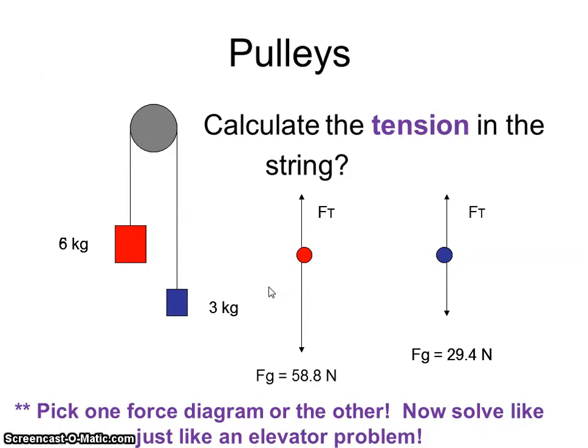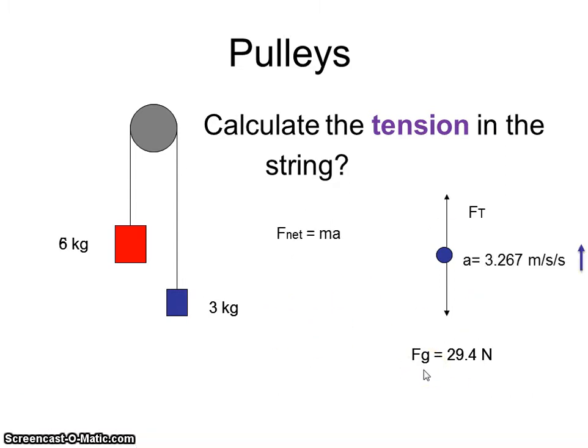Now let's calculate the tension in the string. Just like before, we treat it like an elevator problem. Let's do the blue guy. The blue guy is accelerating upward. What does that mean? My up force has to be more than my down force. Now we do F equals M times A. Mass is 3 kilograms times his acceleration of 3.267. Plug and chug. My force is 9.8.